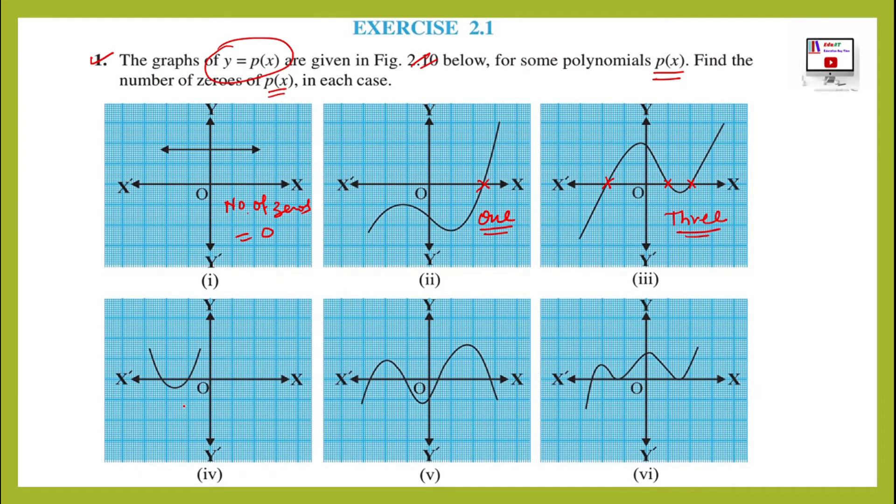Graph 4 ki baat kar hai. There are two intersecting points. Number of zeros will be 2 in this case.